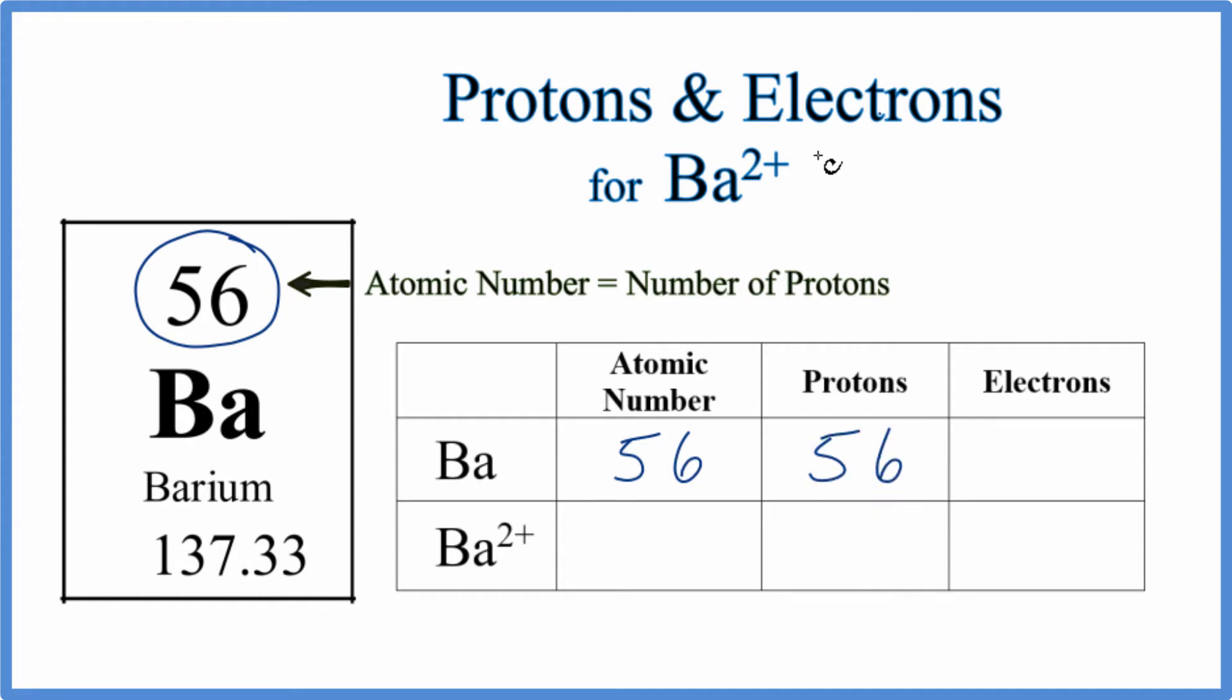When we talk about ions, here we have our barium 2 plus ion and the barium neutral atom. The only difference between the neutral atom and the ion is the number of electrons.